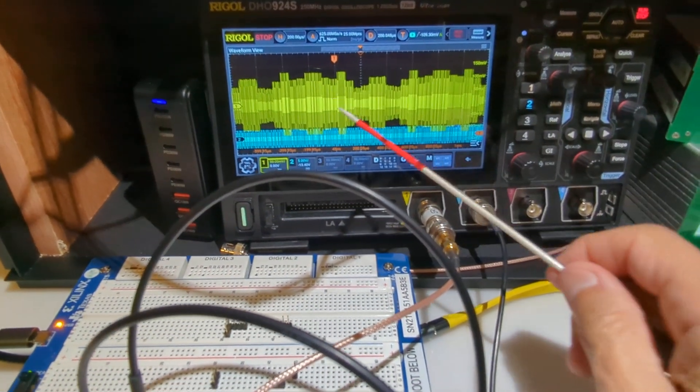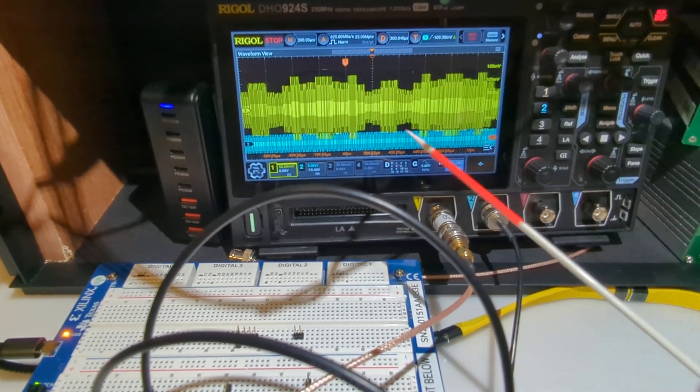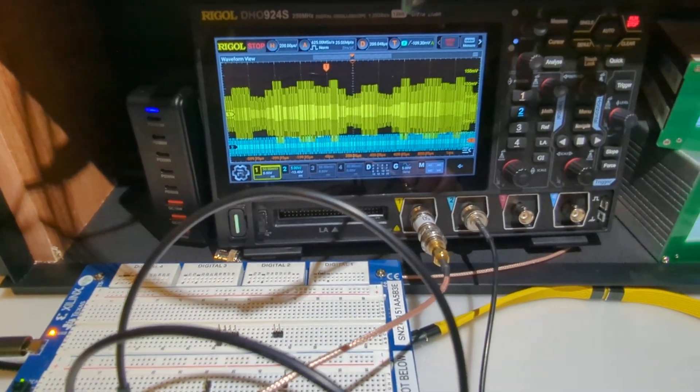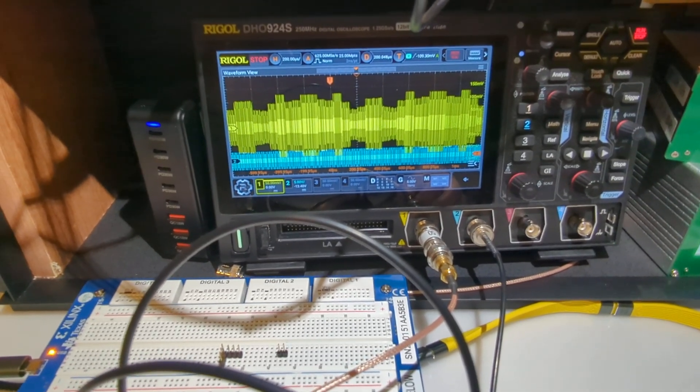So we've got one, two, three amplitudes, essentially, just like we saw on the constellation diagram.